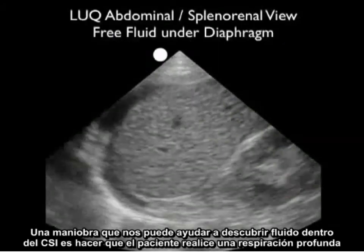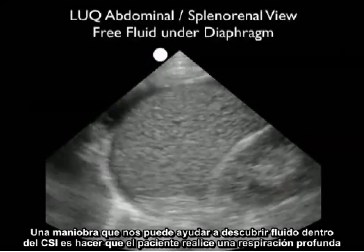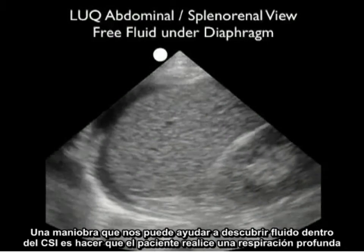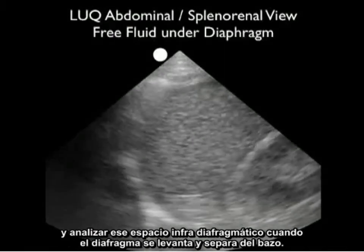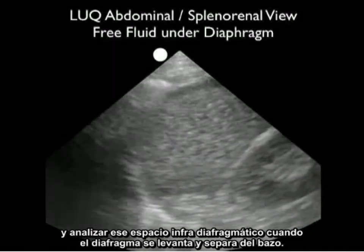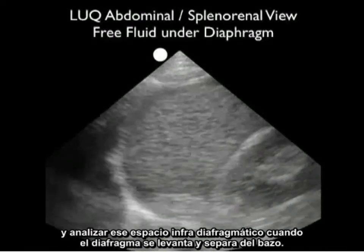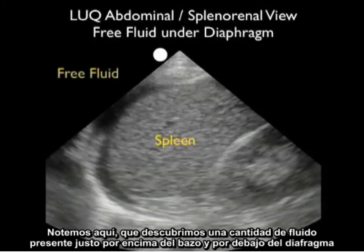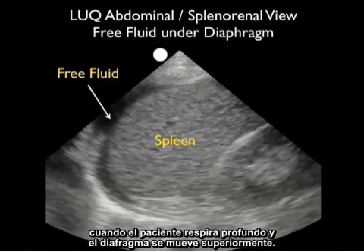One maneuver that can help you uncover fresh fluid within the left upper quadrant is to have the patient take a deep breath and analyze that infradiaphragmatic space as the diaphragm moves upward off of the spleen. Notice here that we uncover the amount of fresh fluid present right above the spleen and below the diaphragm as the patient takes a deep breath and that diaphragm moves superiorly.